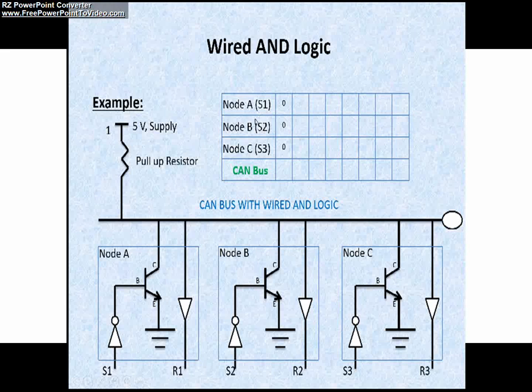Let's consider node A, node B, and node C are transmitting 0 in S1, S2, and S3. What will be the value on the CAN bus? You can see the animated picture: at S1, S2, and S3, we are sending 0. Since this is a NOT gate, we will be getting the inverted value here. That's the reason we are sending 0, we are receiving 1 here. This will turn on our transistor.